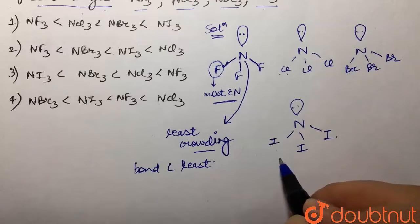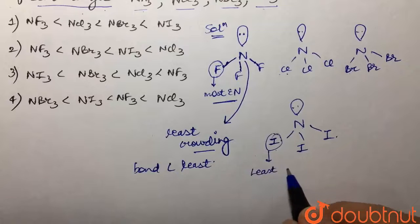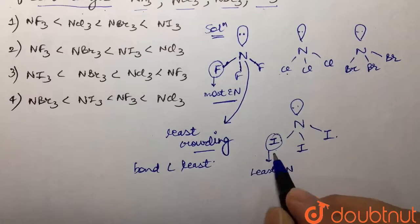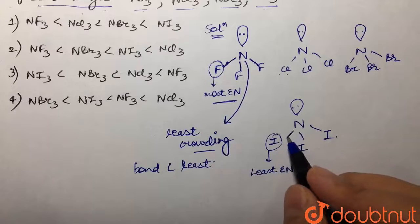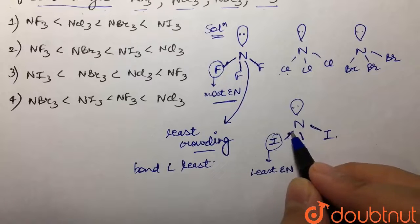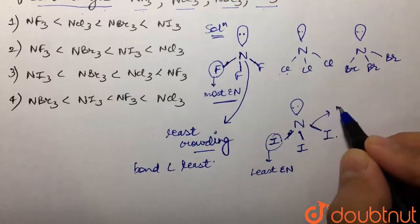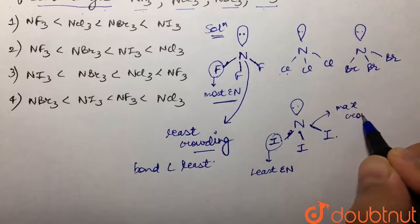So iodine over here is the least electronegative. This is least electronegative, so it would not have that much tendency to attract the shared pair of electrons towards itself. And hence, the electrons would be present near to nitrogen, and hence there would be maximum crowding.